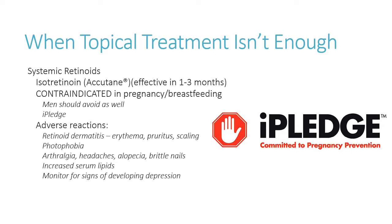When topical treatment isn't enough, we switch over to systemic therapy — for very severe or diffuse disease. The first one is the systemic retinoid isotretinoin, also known as Accutane. This is a serious drug from a safety standpoint, and it falls under something called a REMS program — Risk Evaluation and Mitigation Strategy. Certain drugs are considered very dangerous, either causing very severe side effects at a rate worthy of special monitoring, or potentially dangerous to a fetus, among other qualifiers.